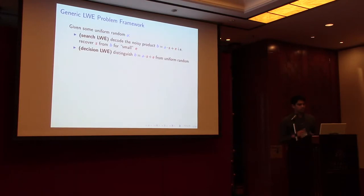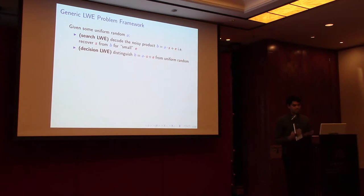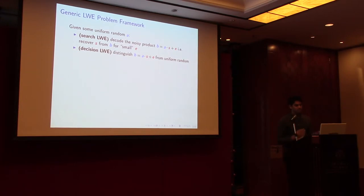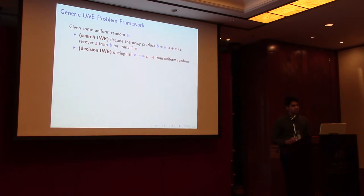What does a generic LWE-type problem look like? The idea is that you're given some uniform random A from some finite set. A search version of LWE would ask you to decode a noisy product — you'd be given B, where B is A times S plus E for some small error, and you'd be asked to recover the secret S.